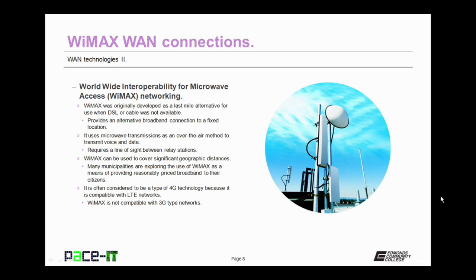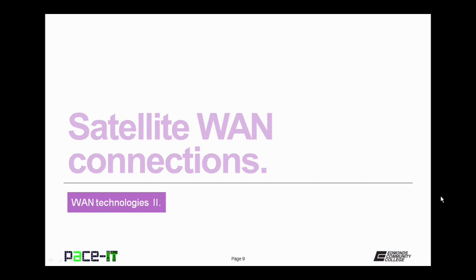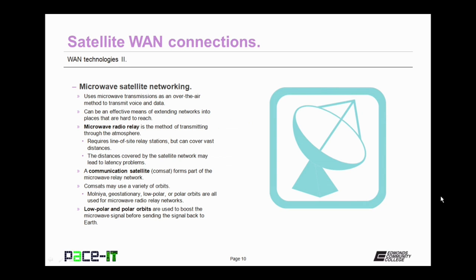WiMAX is not compatible with third-generation cellular networks. Satellite WAN connections are a type of microwave satellite networking. They use microwave transmissions as an over-the-air method of transmitting voice and data, just like WiMAX. Satellite connections can be an effective means of extending networks into places that are hard to reach, and they require line-of-sight relay stations, but can cover even more distances than WiMAX — because they utilize a satellite network.